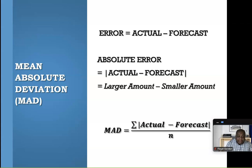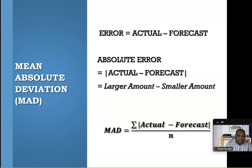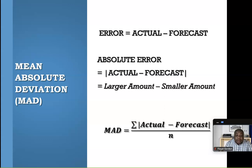So the mean absolute deviation, MAD. First we're calculating error, which is the actual minus the forecast — what was the actual figure for the month, what was the forecast for the month. Then we're looking at the absolute error. The absolute error is just the numerical difference between the two; we don't care if it's negative or positive. So we simply take the larger amount minus the smaller amount — that's the easiest way to get the absolute error. And the MAD is the average of those absolute errors: the total absolute errors divided by the number of figures.